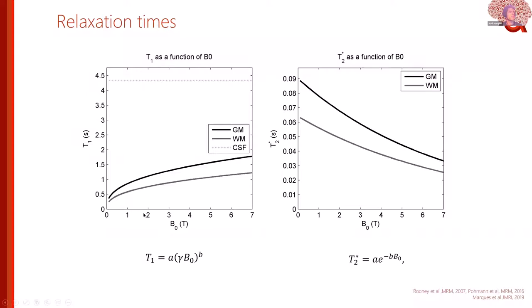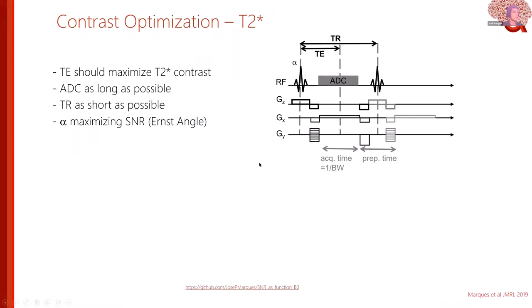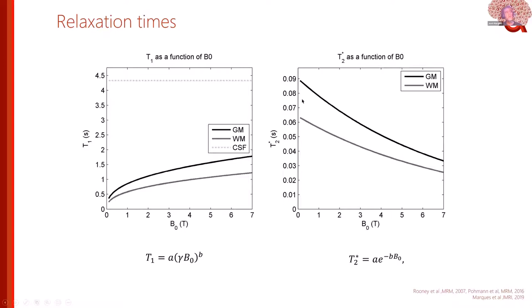As we go from lower to higher fields, T1 values tend to get longer and longer, which is good because we can more easily distinguish gray matter from white matter. This can help us distinguish thalamic structures that sit somewhere between gray and white matter. On the other hand, T2* values are decreasing, which means we can acquire images faster.